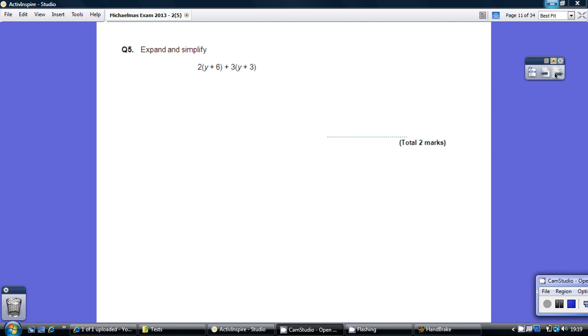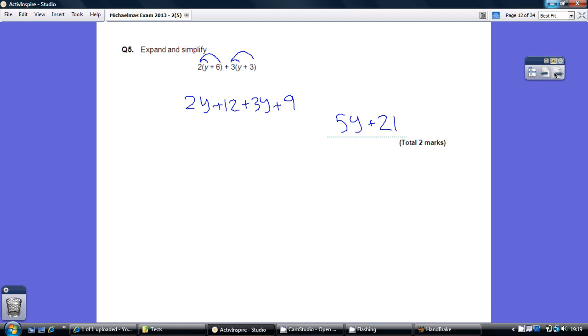Question five solution: This is just two lots of the claw - expanding is getting rid of the brackets. Two times y, two times six, three times y, three times three, giving us this. Then the expanding bit is gathering up your y's. We've got two of them here and three of them here, so that's 5y. And 12 here, 9 here - 12 and 9 is 21.